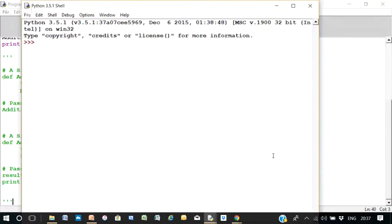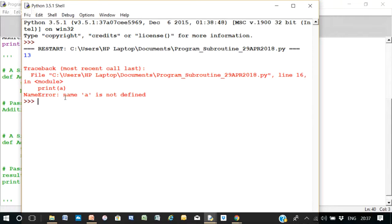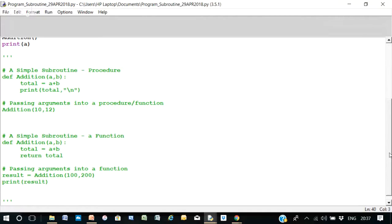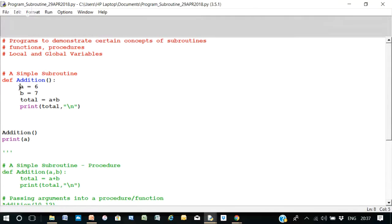Okay, let's run it again. And it says name a is not defined. And why does it say that? It's because a is local to this subroutine or function or procedure called addition. And it cannot be seen or accessed outside of this subroutine. So a is a local variable there.